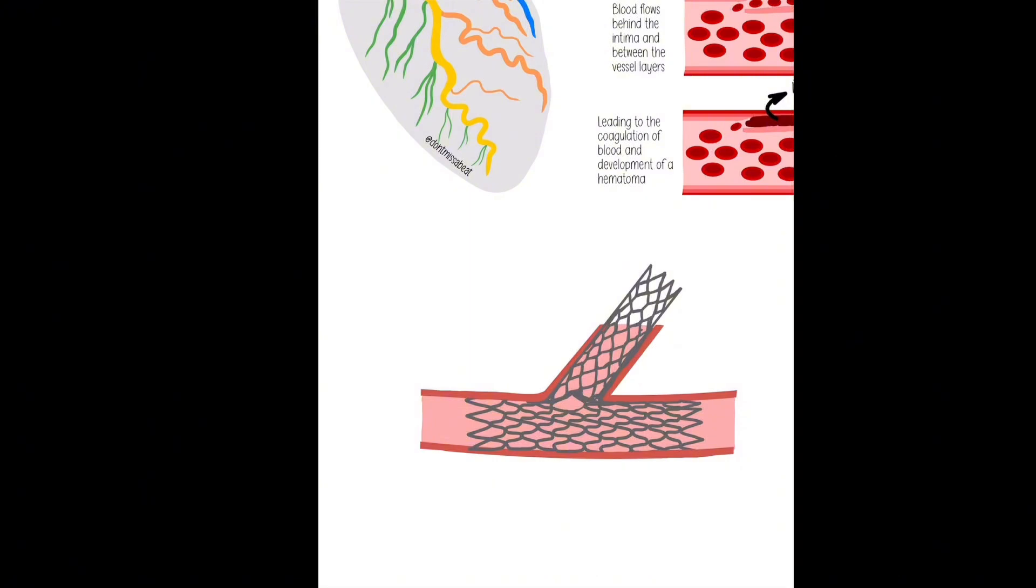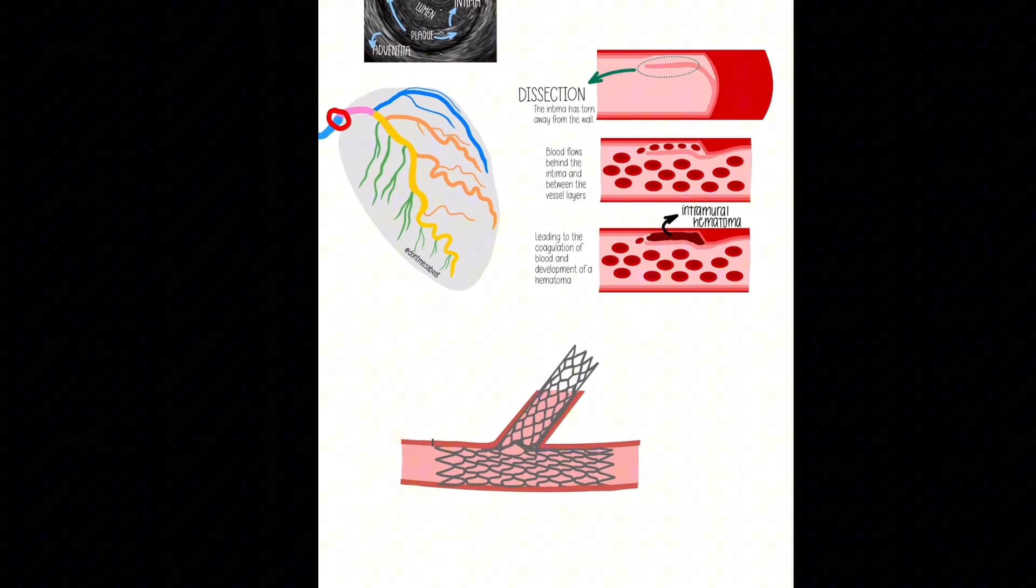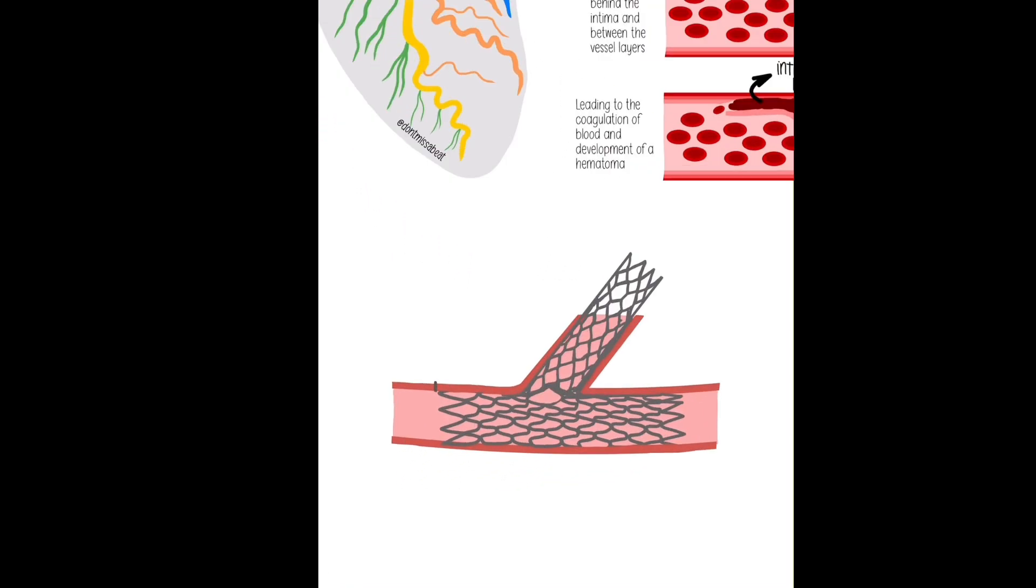Or you have what we would call a stent edge dissection. Sometimes we stent and we try to stent normal to normal, so if the lesion was here, we try to fully cover it. But sometimes, this is a type of metal at the end of the day, it can cause a little tear right here at the edge of the stent. Then you might start to see this process that we discussed earlier where you start to get some of that coagulation effect, this little tear that doesn't really fully heal. You can get instant thrombosis.